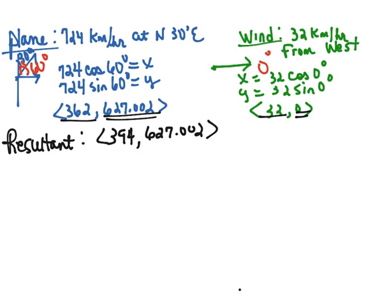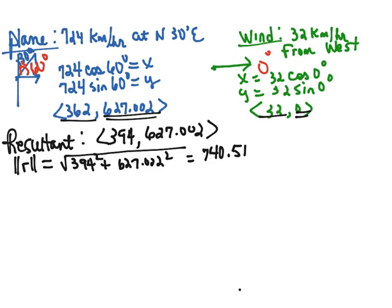So now to find its magnitude, to get our speed we would take the square root of 394 squared plus 627.002 squared. And we'll get that our resulting speed is equal to 740.519 and that would be kilometers per hour, which is the same thing as we got when we worked the problem using laws of sines and cosines.